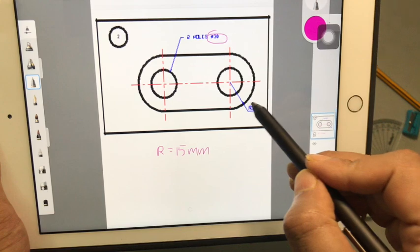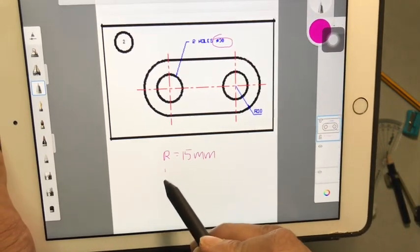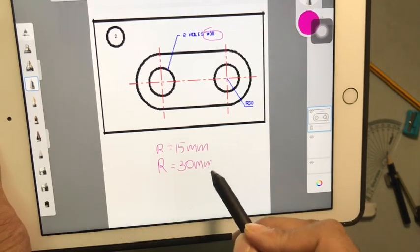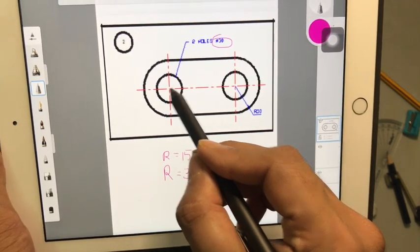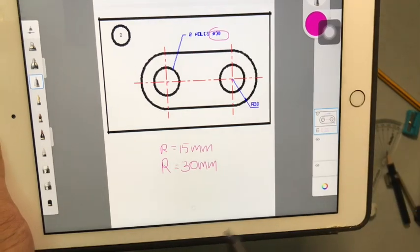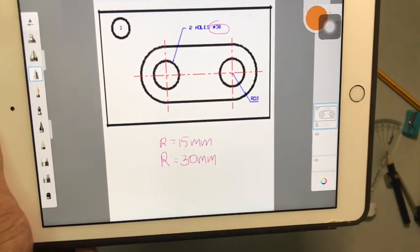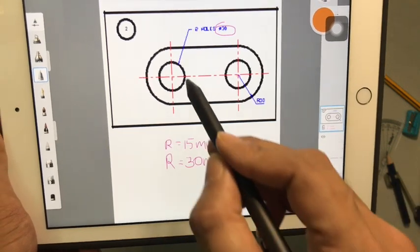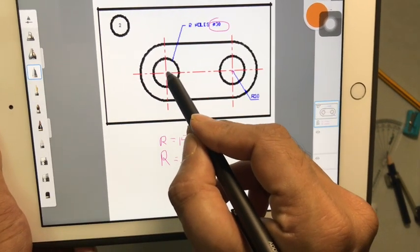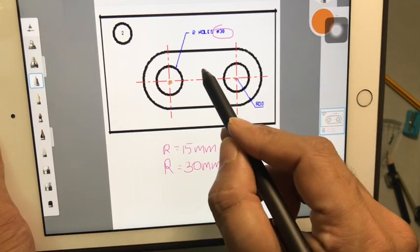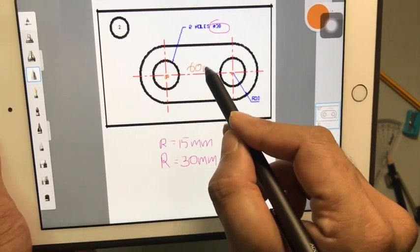The radius of the outer circle is given as 30 mm. So I will just write it like this, which is your 30 mm. Now, usually the distance between the center of this circle and the center of this circle is given. But unfortunately, I cannot find the dimension. So what we will do is, we will assume that the distance from this center to this center of this circle is 60 mm.